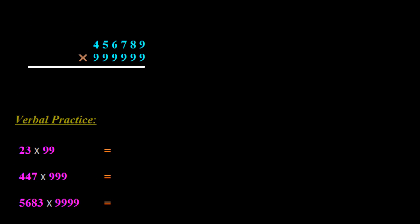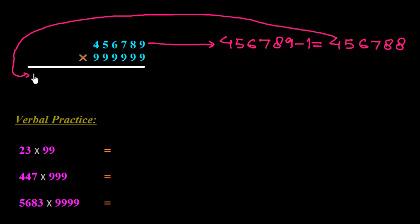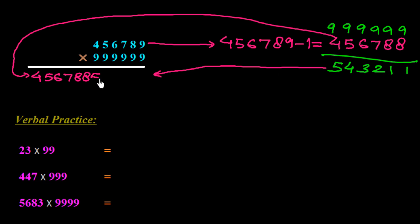One more example: we have the 6-digit number 456789. Subtract 1 to get 456788, which we place on the left side. Now subtract 456788 from 999999: we get 1, 1, 2, 3, 4, 5 — so writing right to left, we get 543211 on the right side. The full answer for 456789 × 999999 is 456788543211.